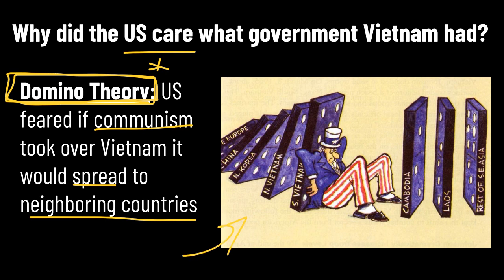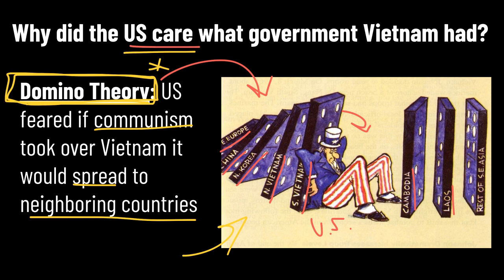This political cartoon well represents domino theory. We've got Uncle Sam here, abbreviated as the US. He is trying really hard to stop the dominoes from falling. We can see there's South Vietnam; he has his back against North Vietnam, North Korea, China, and what looks like Eastern Europe. He's trying to hold back these dominoes so they don't fall and knock down Cambodia, Laos, and the rest of the world. This visual symbolizes the why — why do we care, why do we get involved? Because we don't want all these countries becoming communist.